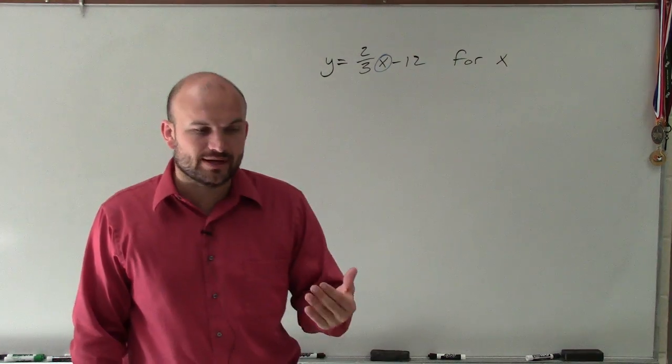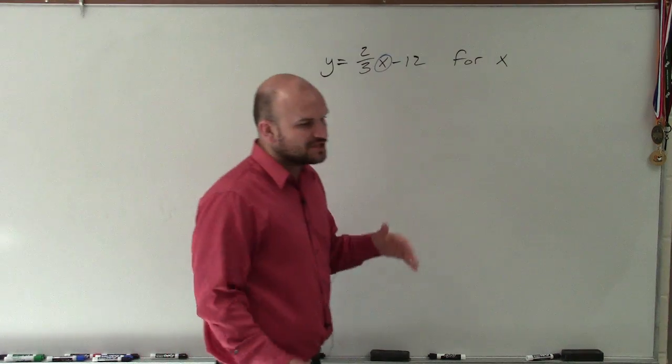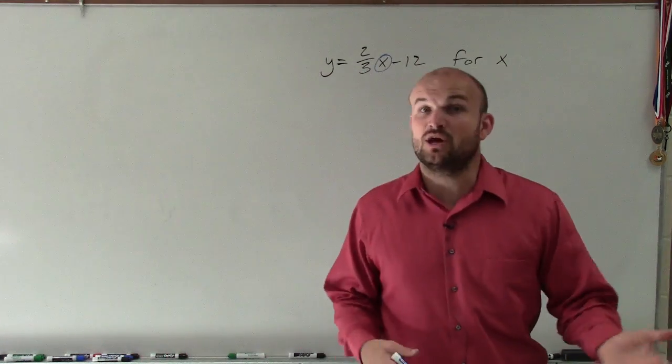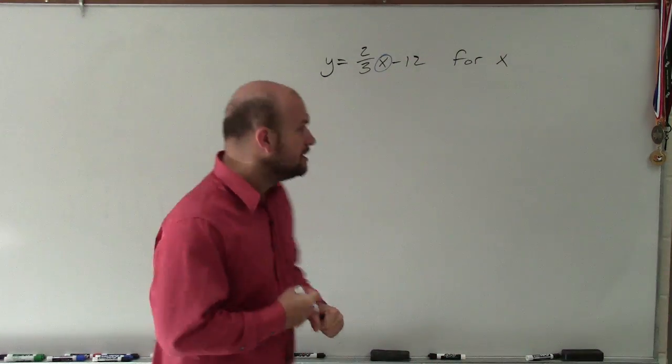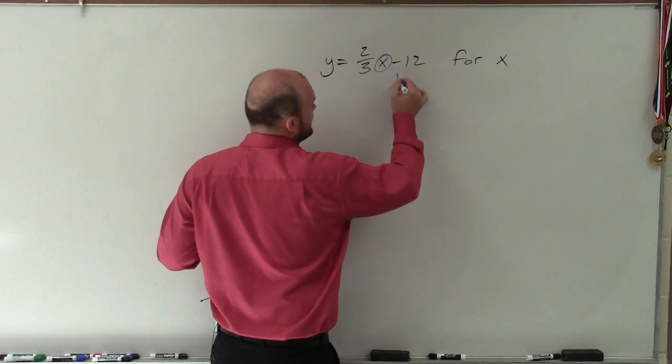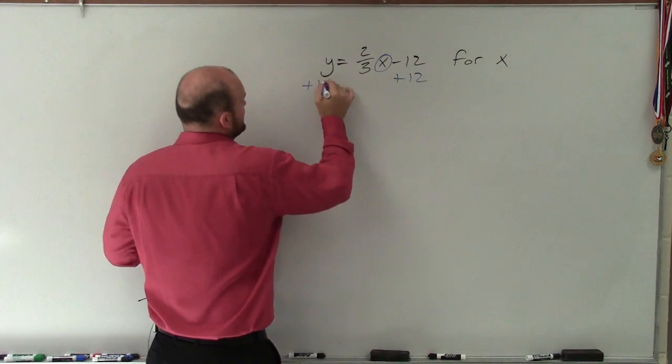Now remember, when we're solving equations, we always want to use our inverse operations as well as the reverse order of operations, meaning I want to undo addition and subtraction first. So to do that, what I'm simply going to do is add 12 to both sides.